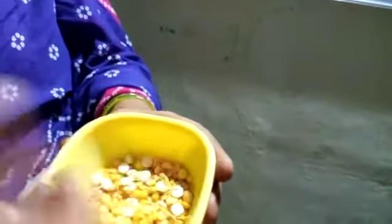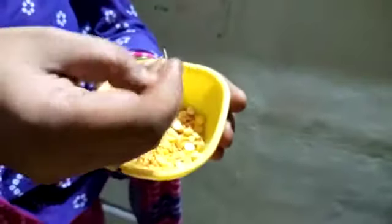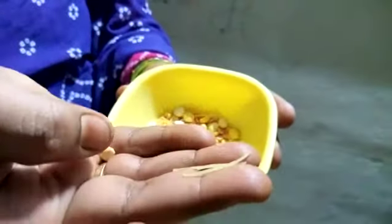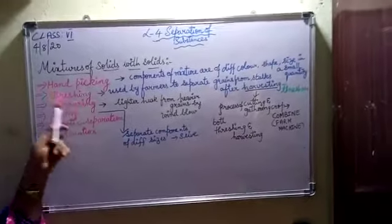By using the hand picking method, I am separating the components of the mixtures. I have separated this one and can separate the bambino as well. So if it is in a small quantity and of different shape, size, and color, we use this method called hand picking. Now coming to the second one — threshing.